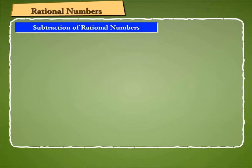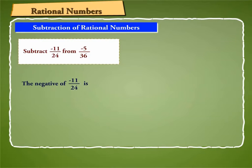Let us understand this with the help of an example. Let us subtract minus 11 by 24 from minus 5 by 36. The negative of minus 11 by 24 is 11 by 24.